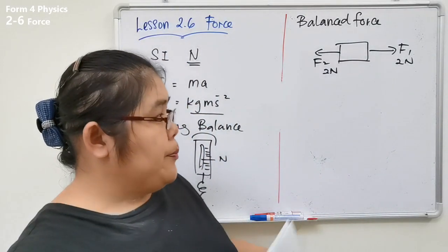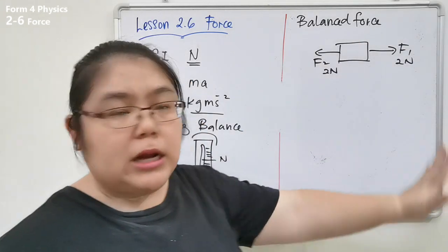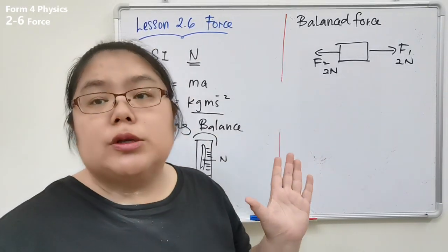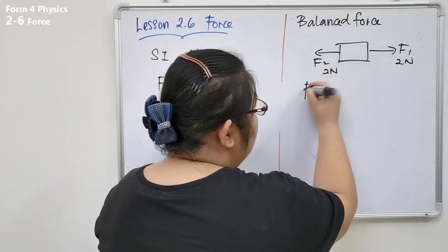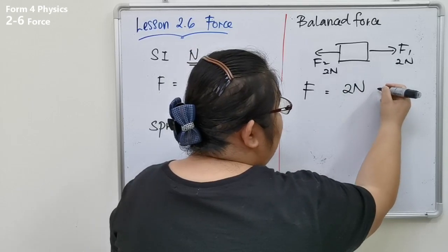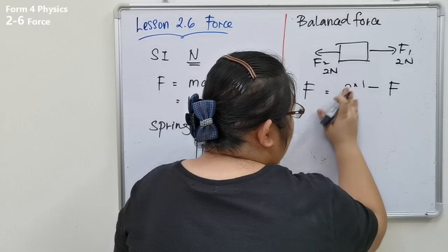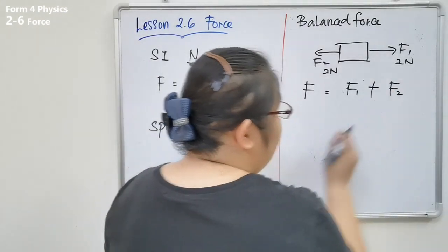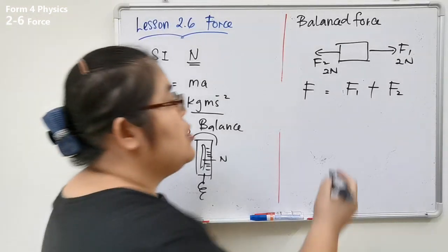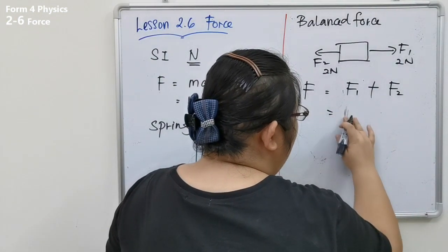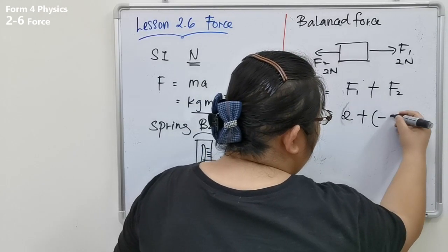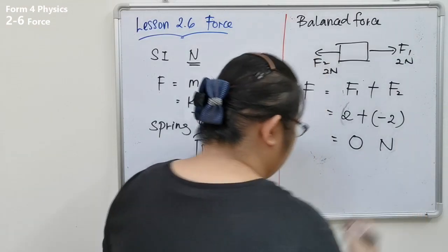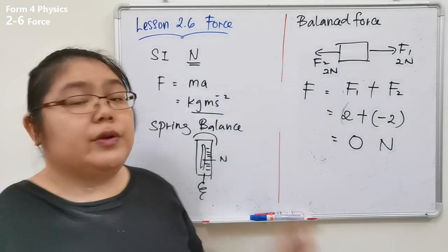For example, a box is pulled by two forces: one to the right and one to the left with the same magnitude. The net force = F1 − F2. If F1 is positive and F2 is in the opposite direction, the result is zero. When the total force equals zero newtons, we call this a balanced force situation.